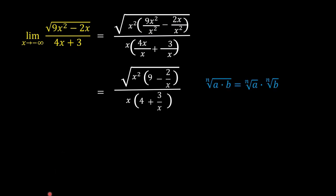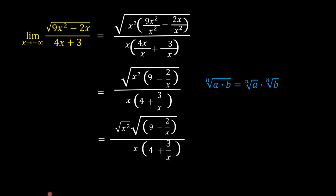We can now apply this property of radicals: the nth root of a times b is equal to the nth root of a times the nth root of b. So we can write the numerator as the square root of x squared times the square root of the quantity 9 minus 2 over x, divided by x times the quantity 4 plus 3 over x.